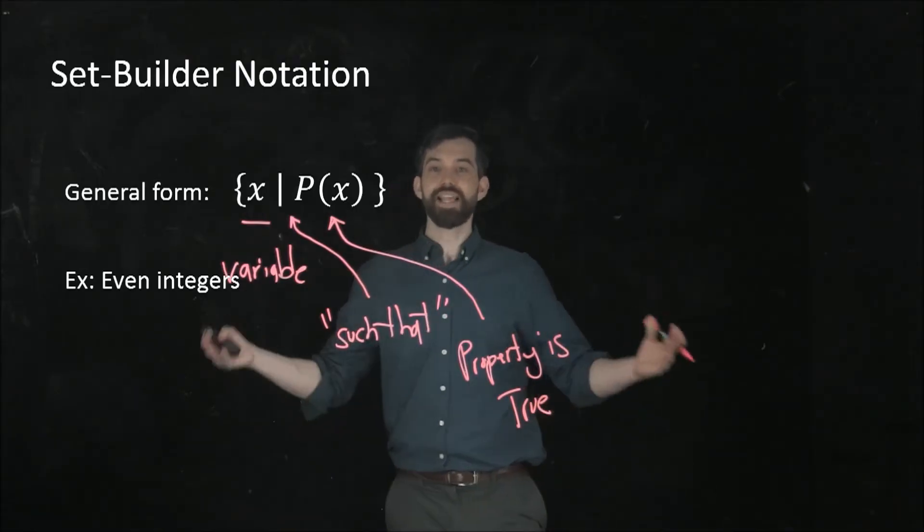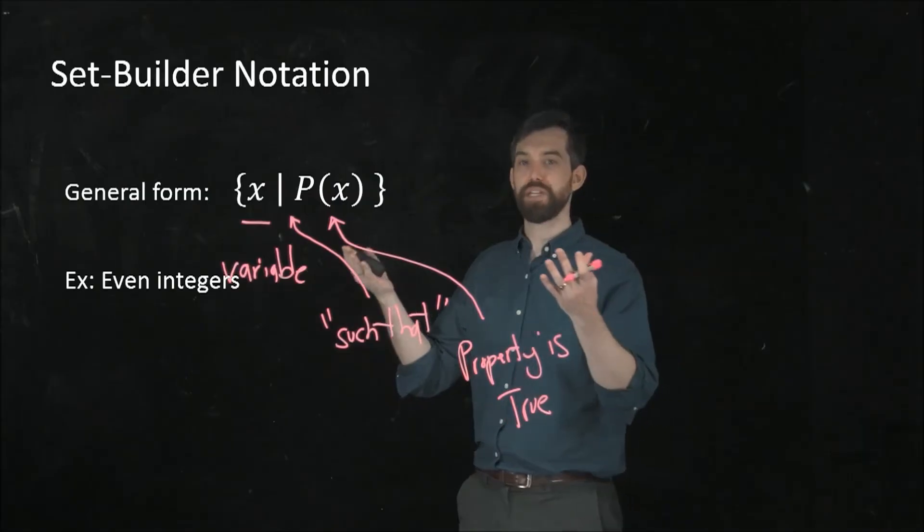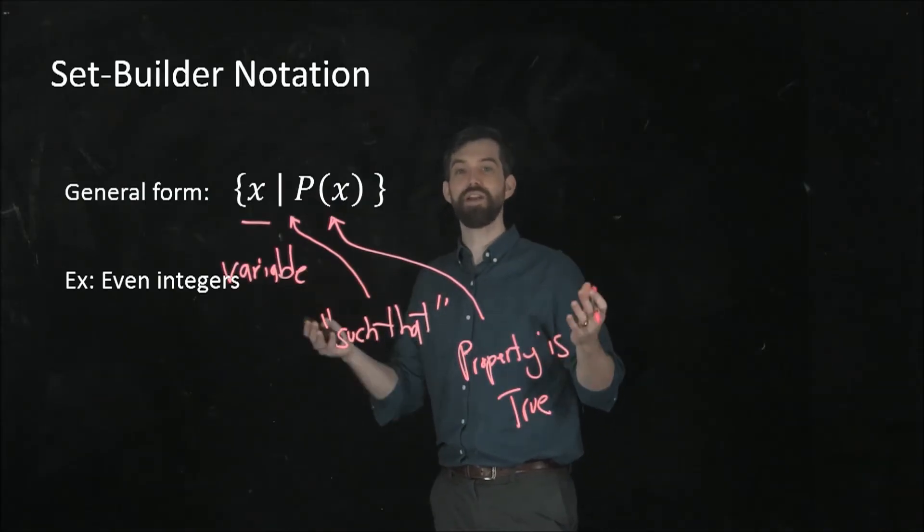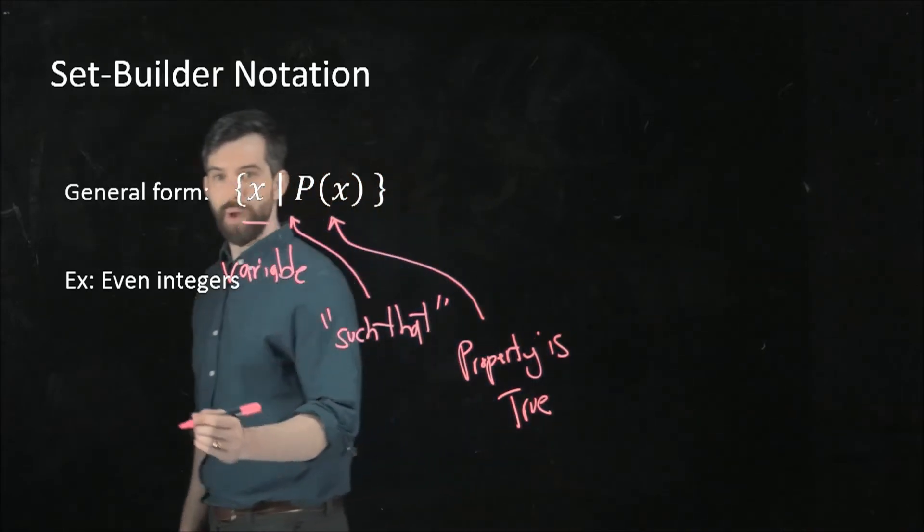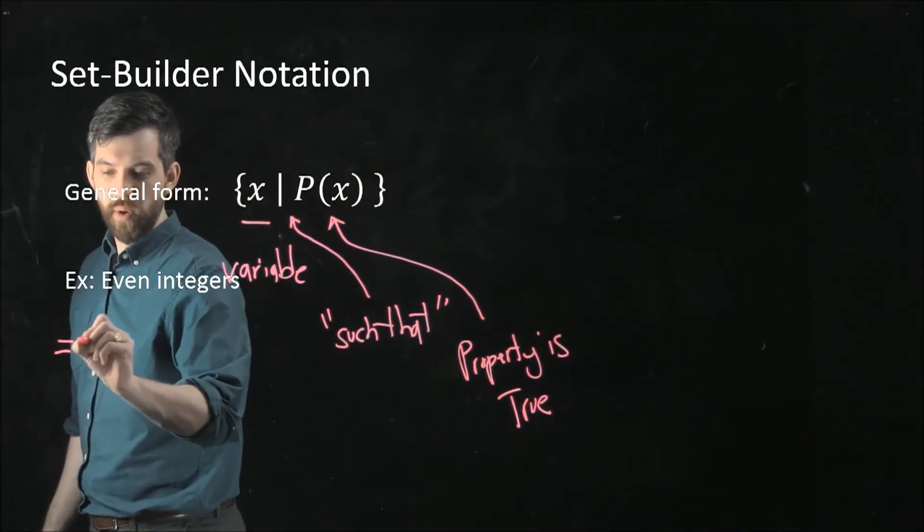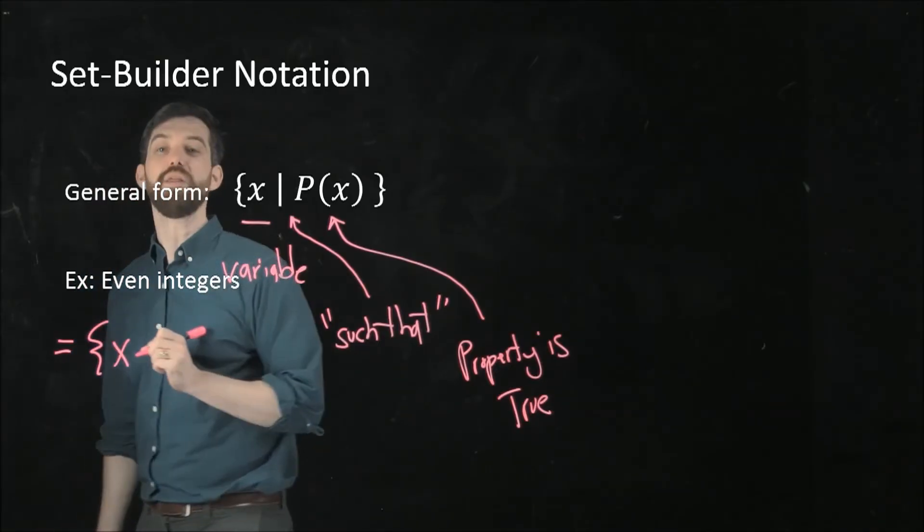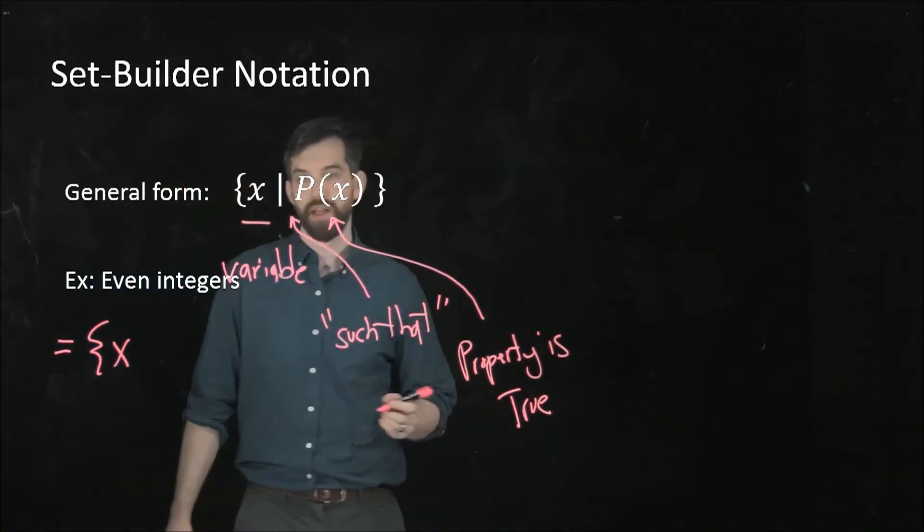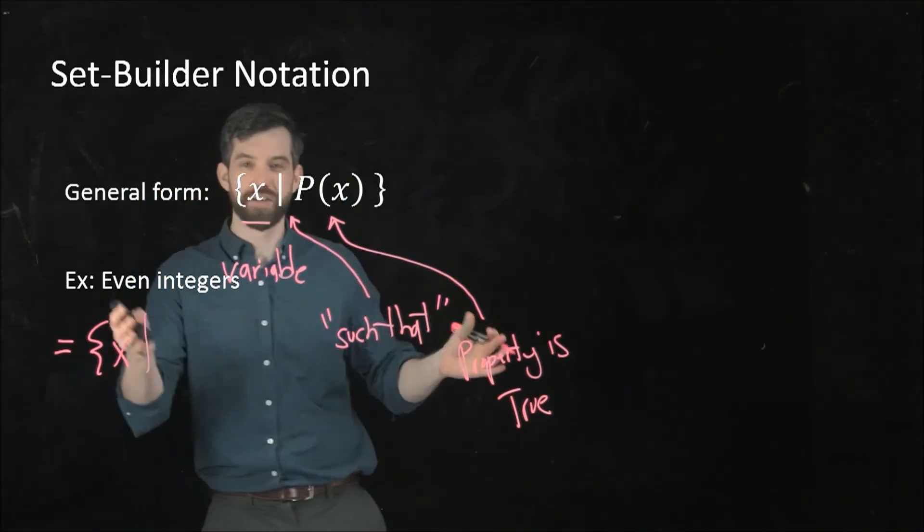So as an example, if I want to take the set being the even integers, I want to be able to describe how do I describe the even integers using this set builder notation? Well, I'm going to claim that this is going to be equal to the set of all different elements x. I have my variable. All different elements x such that. Now, what does it mean to be an even integer?